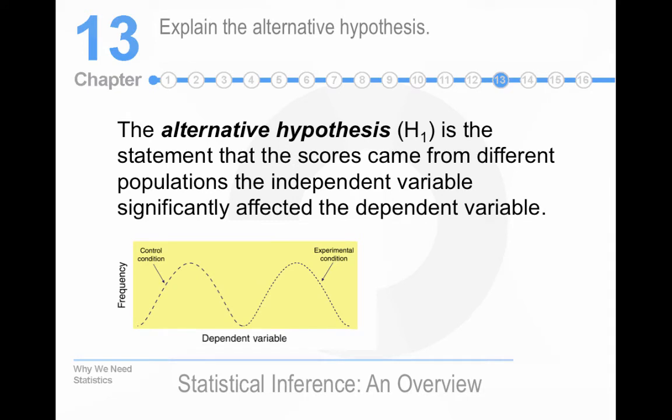So, the alternative hypothesis, H1, or sometimes represented as H sub A, is the statement that the scores came from different populations and the independent variable has significantly affected the dependent variable.